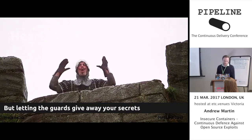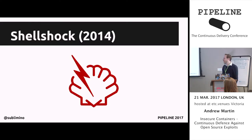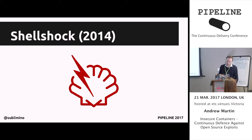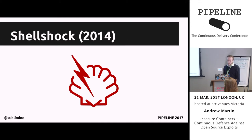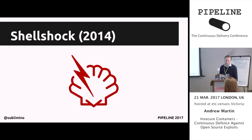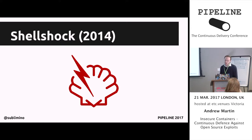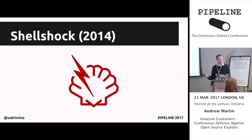Shellshock was a bash vulnerability that allowed privilege escalation by adding code to a specially crafted environment variable containing a function declaration, with the calling process executing the extra code. While Heartbleed leaks data, Shellshock can be used to take over the host system. It impacted CGI web apps, SSHD, DHCP clients, OpenVPN, all Linux boxes, all FreeBSD boxes, all post-'91 Unix deploys, and all Macs — basically the world for most of us here.